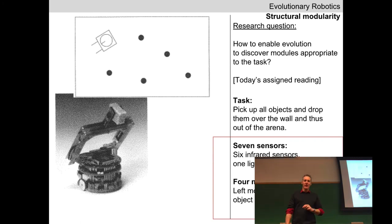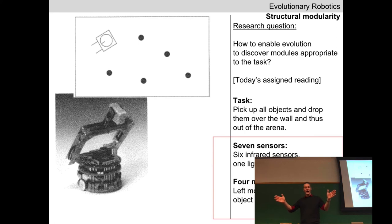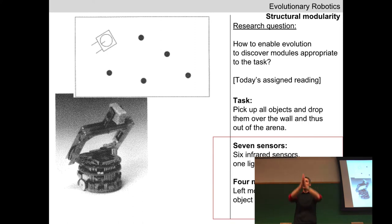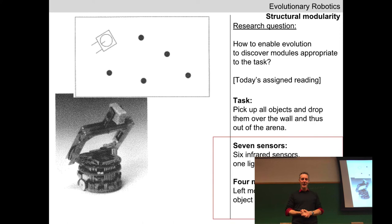The experiment uses a Khepera robot — a small two-wheeled robot with a gripper — moving inside a walled arena containing five wooden cylinders. The robot must find the cylinders, grab them, drive to the edge of the arena, and drop them outside — a wooden cylinder cleanup task.